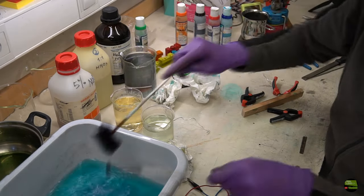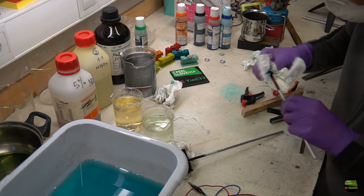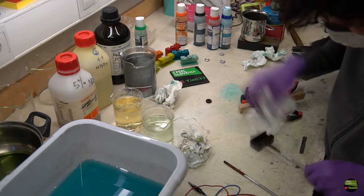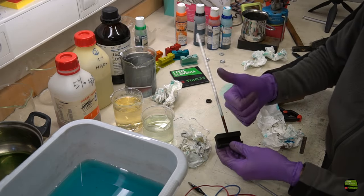If you need more parts with the exact same color, do it all together. Anodize them together and color them together. So you do everything for the exact same amount of time. Otherwise there's no way to get the same color twice.